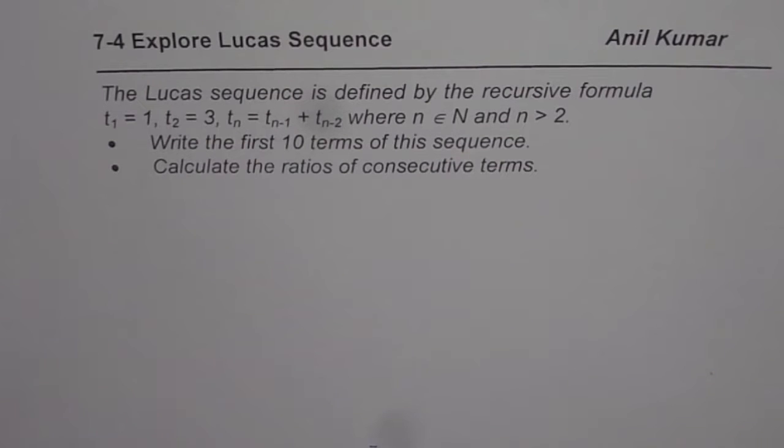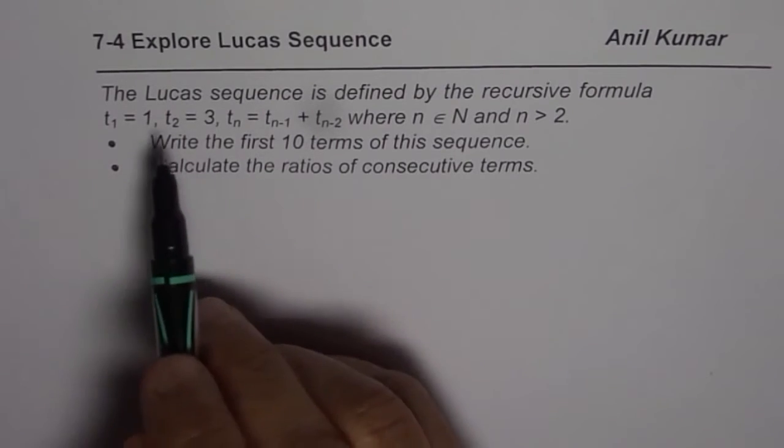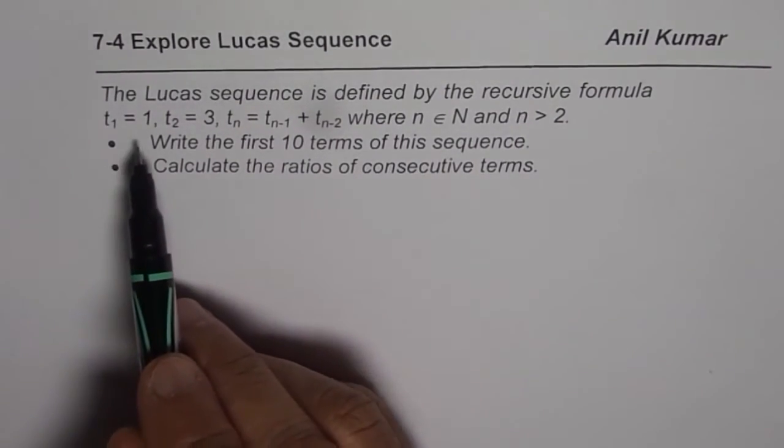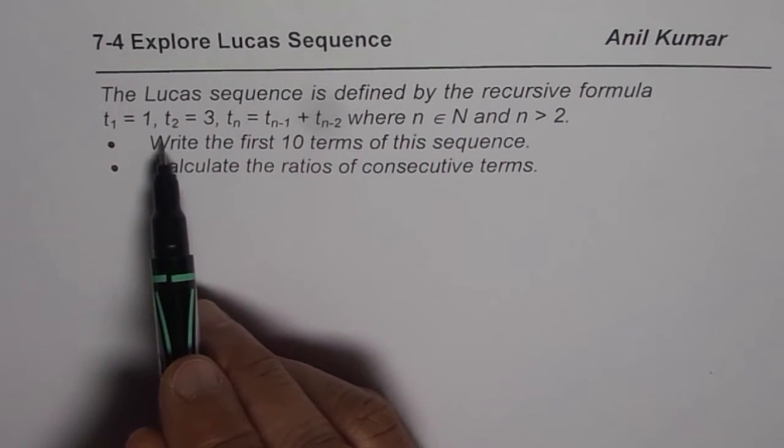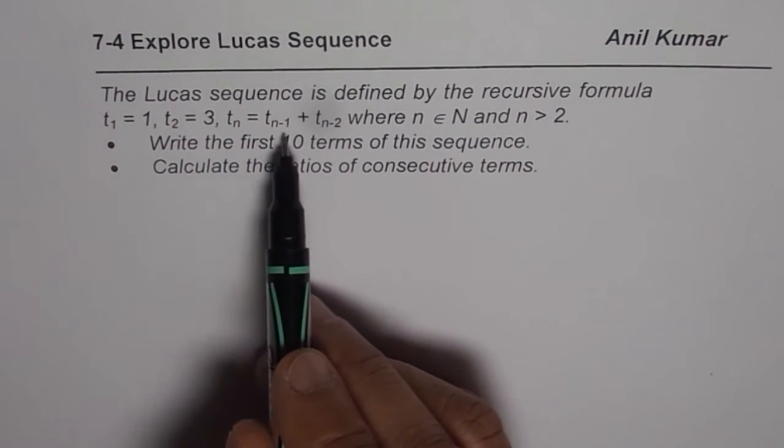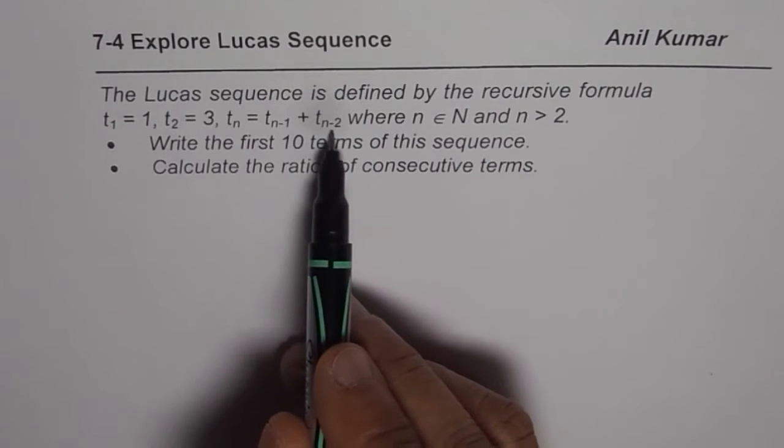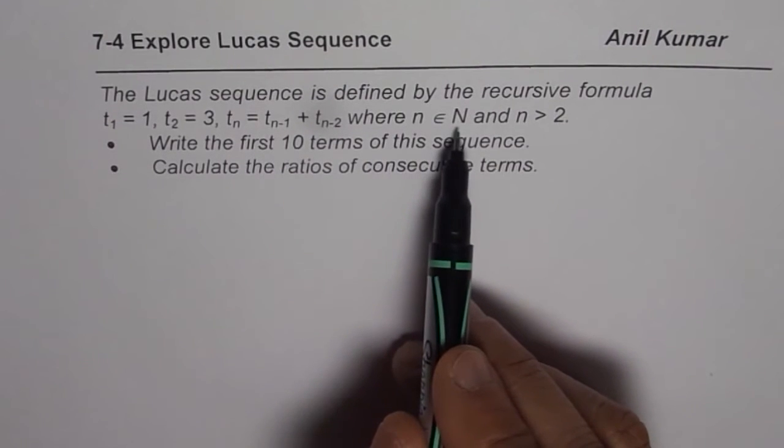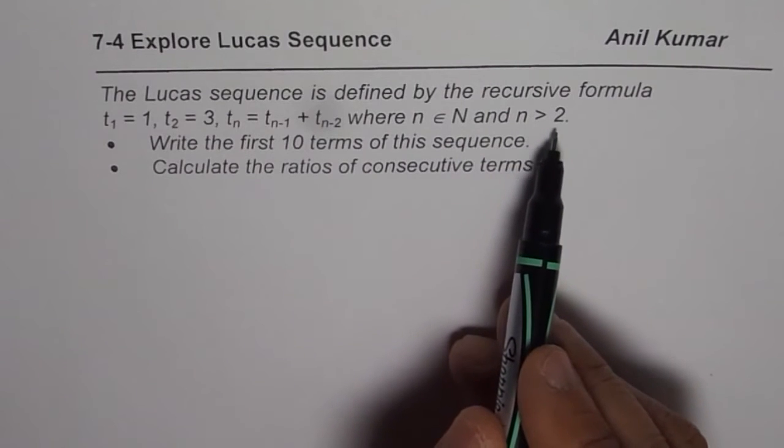I am Anil Kumar and in this video we are going to explore Lucas sequence. The Lucas sequence is defined by the recursive formula t1 equals 1, t2 equals 3, tn equals tn minus 1 plus tn minus 2, that is sum of previous two terms, where n belongs to natural numbers and n is greater than 2.